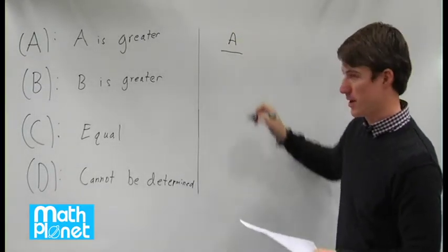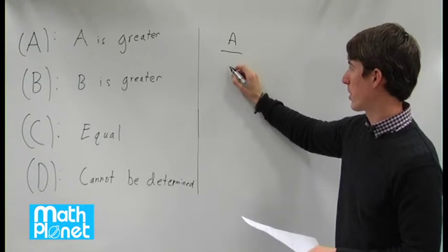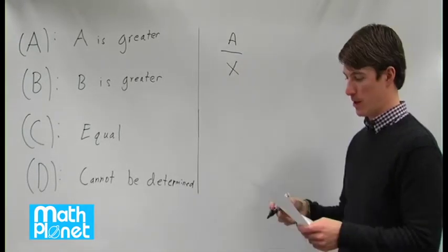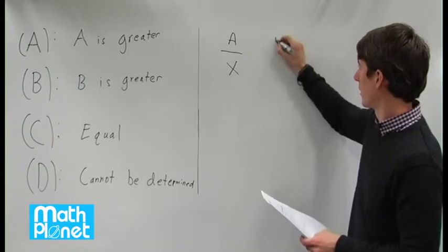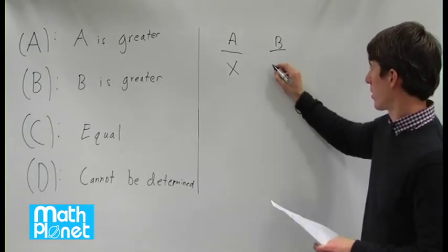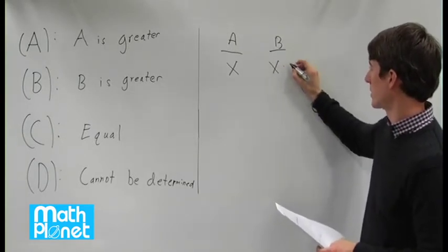So for this problem, column A is the wholesale price, we'll call it X, some unknown wholesale price of the television. In column B we have the new price during the sale, so the retail price of the TV.